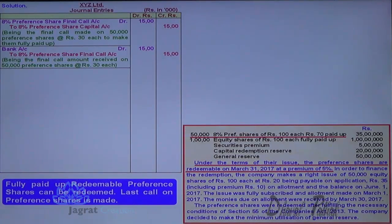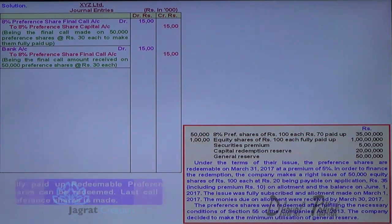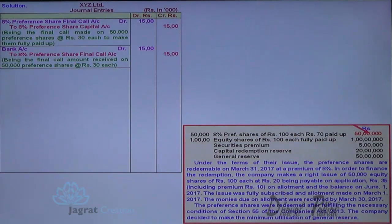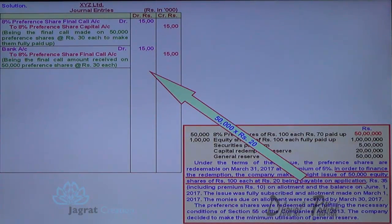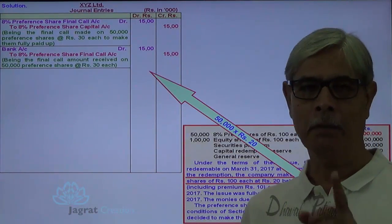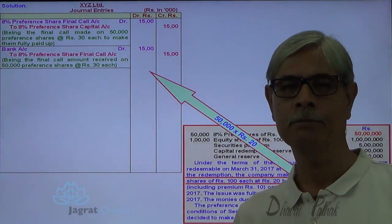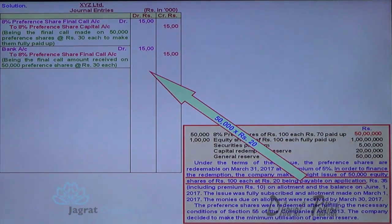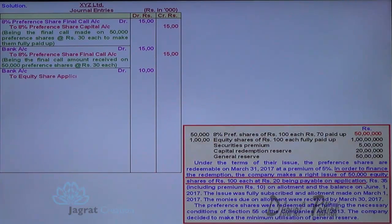These preference shares are now not of 35 lakhs — they are fully paid up. So 35 lakhs will become 50 lakhs. For the purpose of redemption, equity shares are issued. Amount received with application is Rs. 20 per share. Number of shares issued are 50,000, so 50,000 into 20 — bank account debit to equity share application account credit.